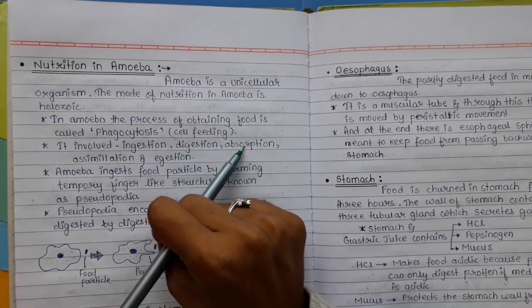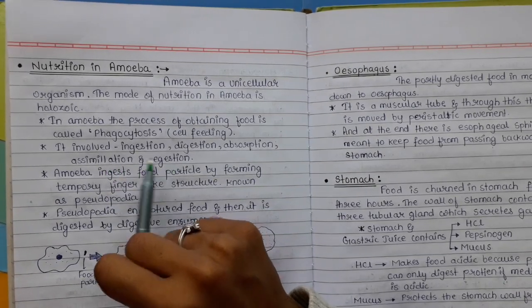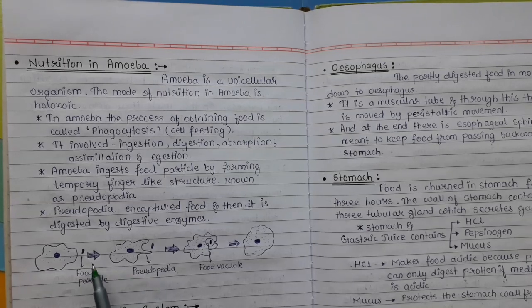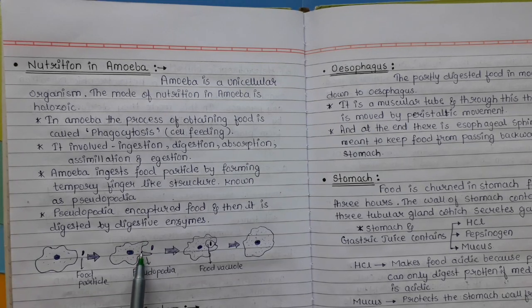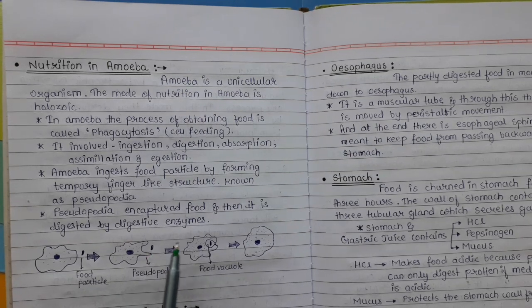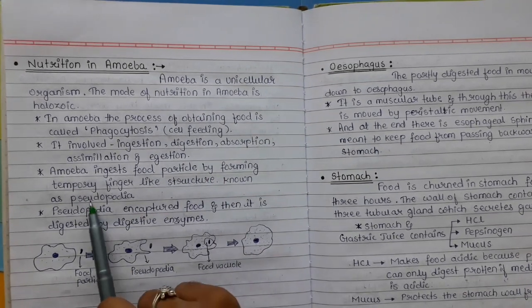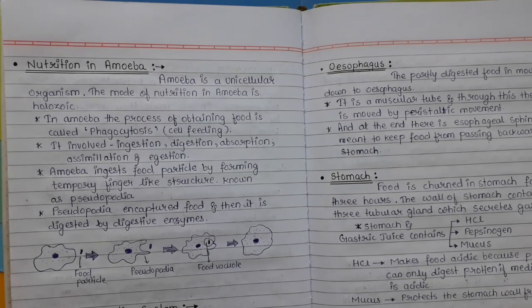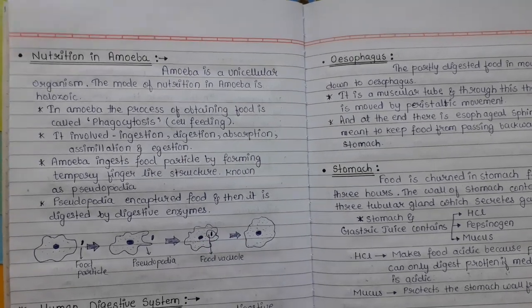Amoeba ingests food particles by forming temporary finger-like structures known as pseudopodia. The pseudopodia surround and capture the food, which is then digested by the digestive enzymes. After digestion, the food is absorbed and assimilated. If you need to draw a diagram of amoeba, show pseudopodia trapping the food particle.